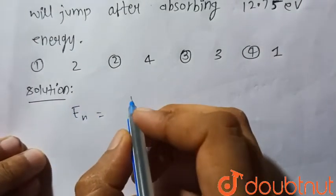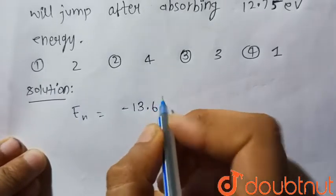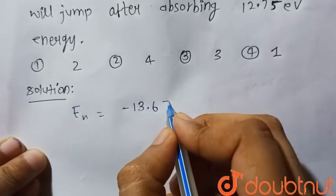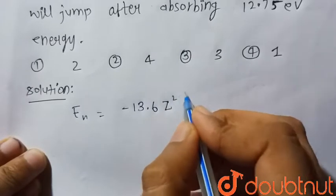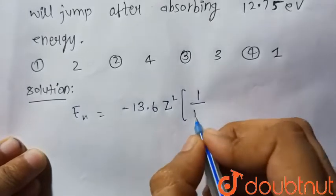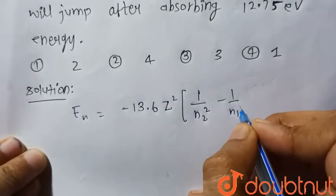En is equal to minus 13.6 Z square, 1 by N2 square minus 1 by N1 square.